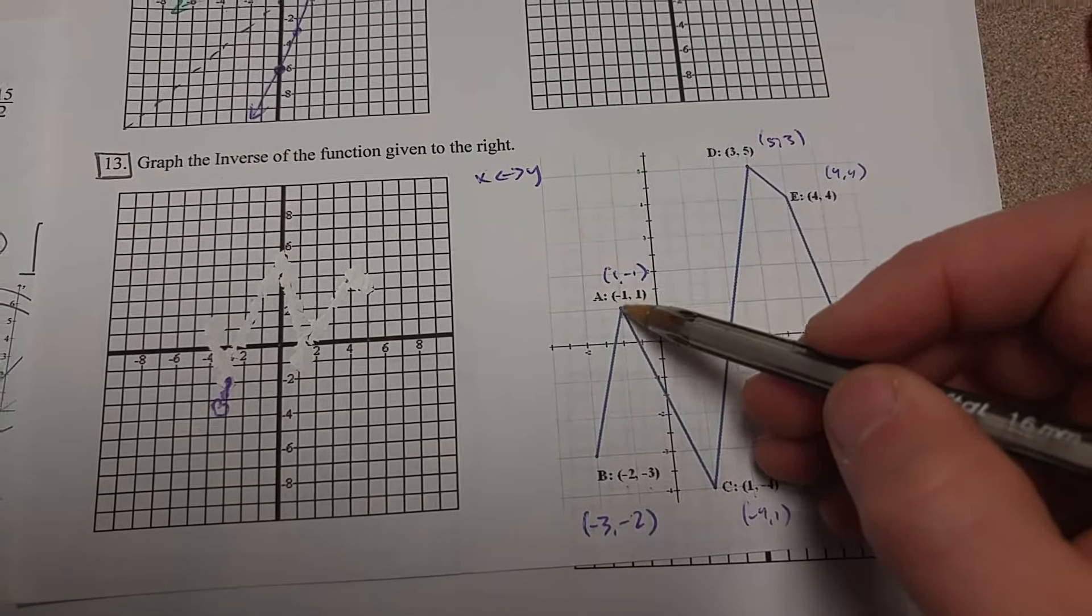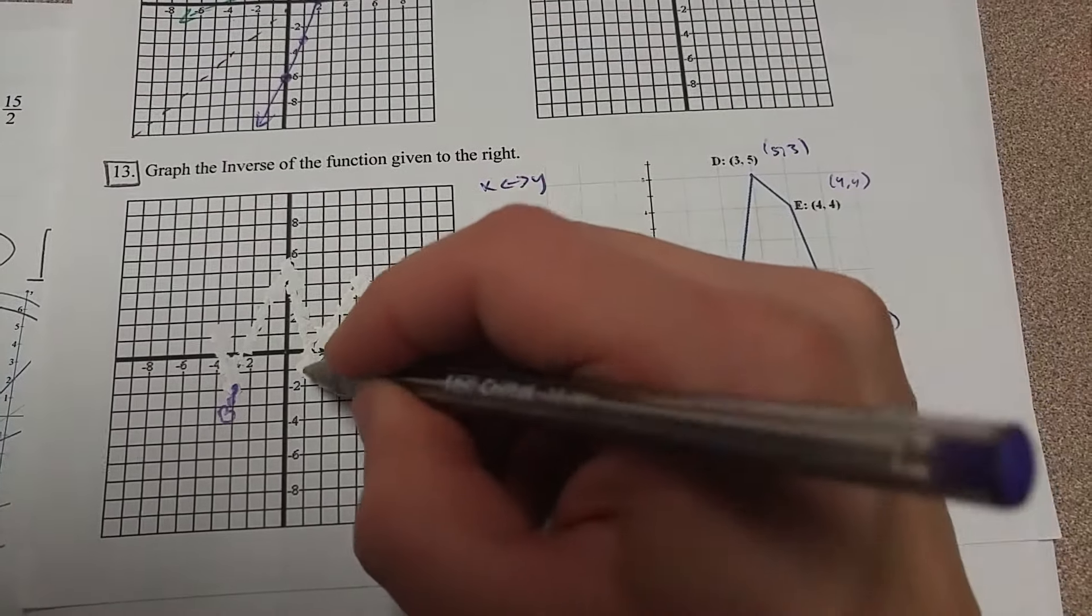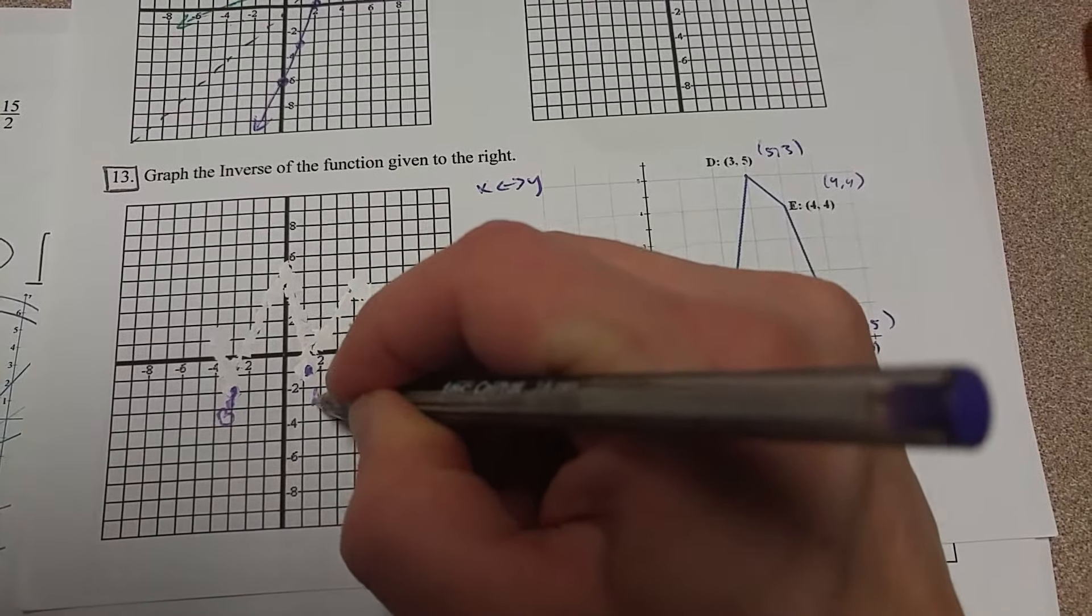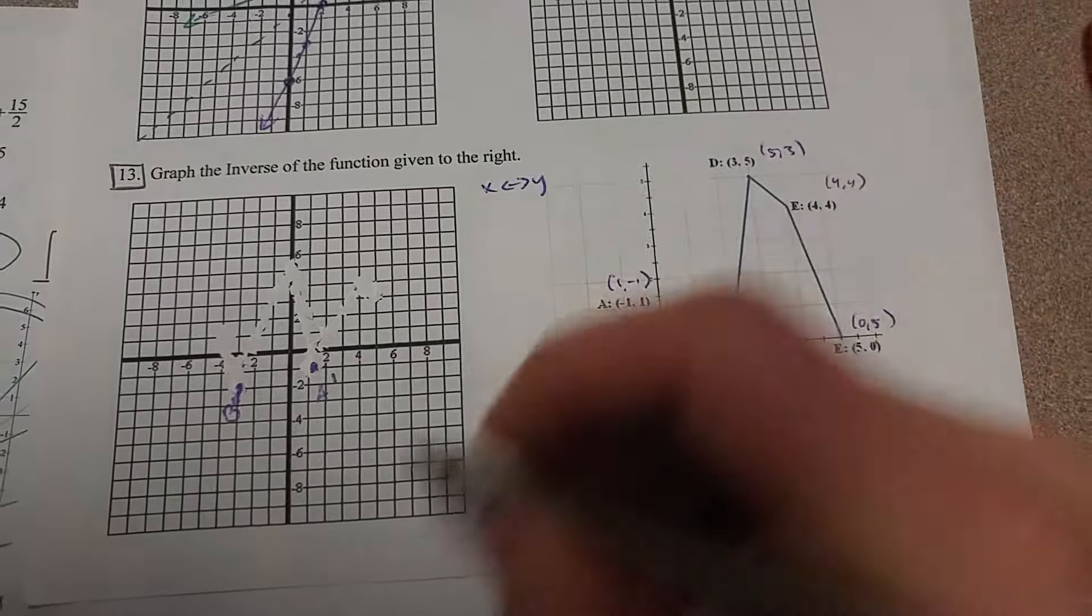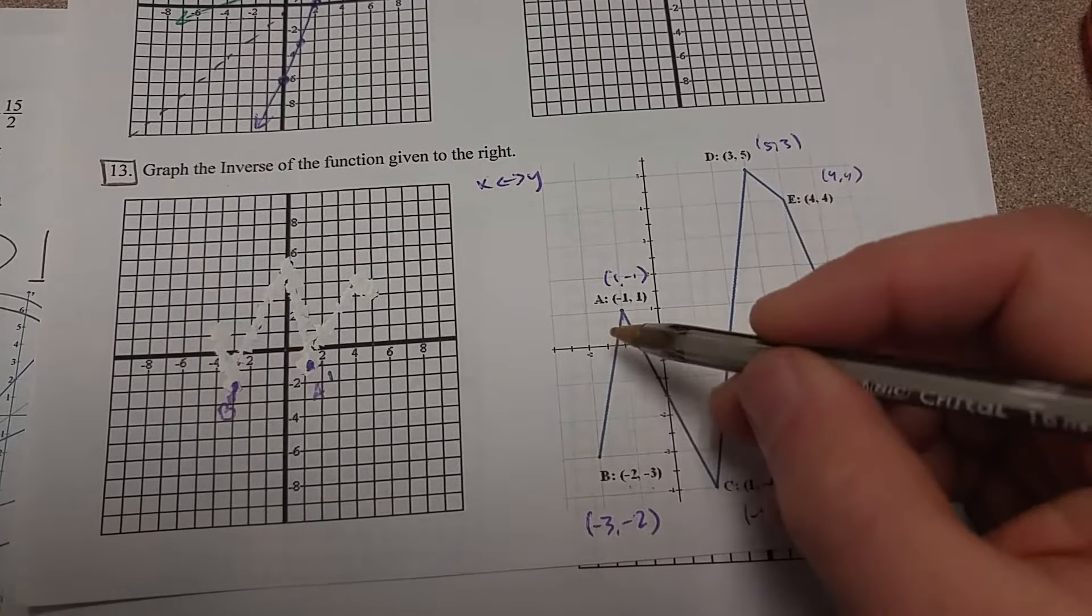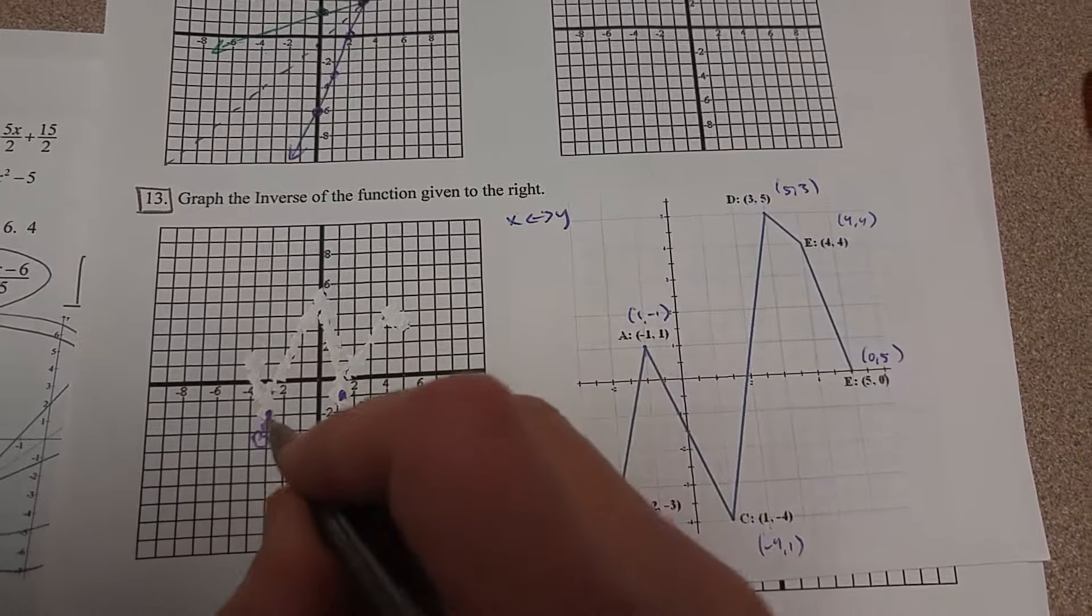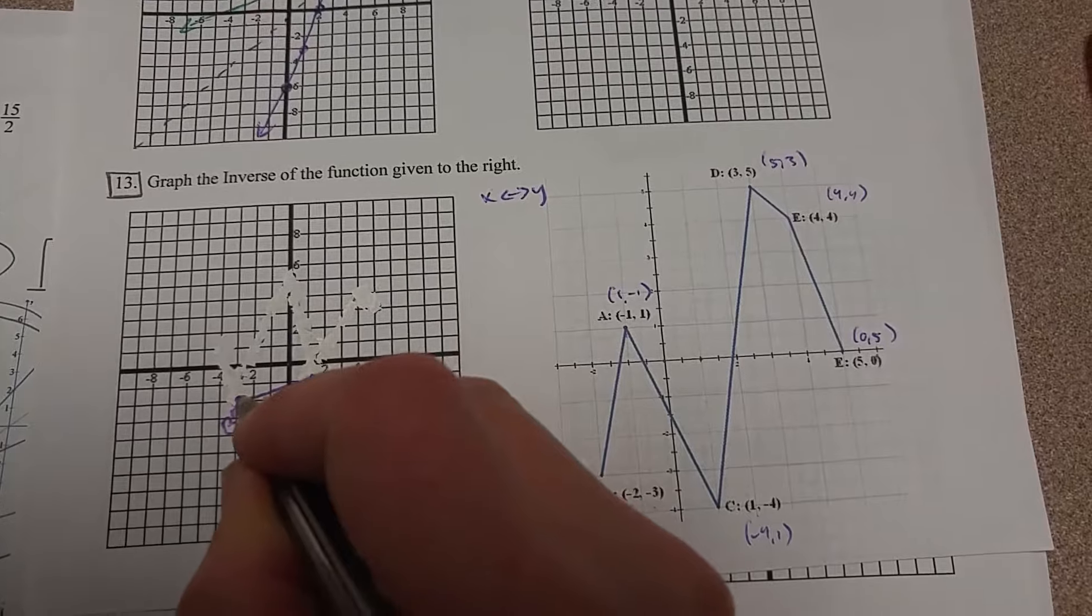So the inverse of A is going to be 1, negative 1. So 1, negative 1. So this one is A prime. And remember, those are going to connect with each other. So B prime and A prime have to connect. So I'm going to go ahead and draw that B prime to A prime connect.